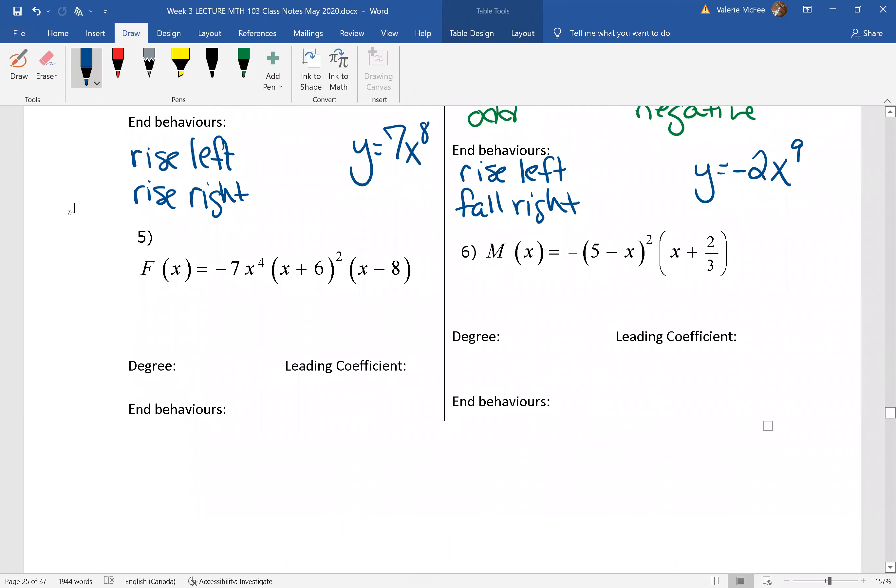Question 5: find the degree, the leading coefficient, and the end behaviors. I hope you were able to see that this has a degree of 7 by taking that x⁴. Opening these brackets would give me an x². This one would give me x to the power of 1.